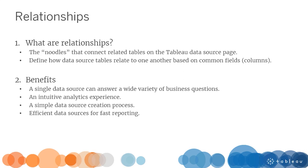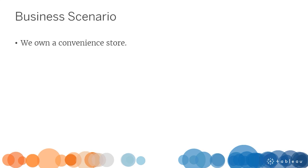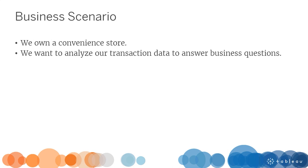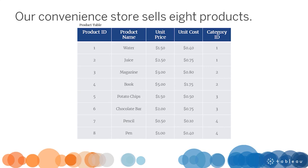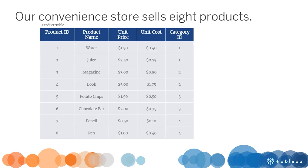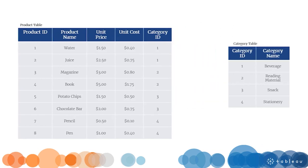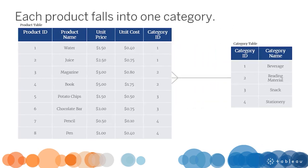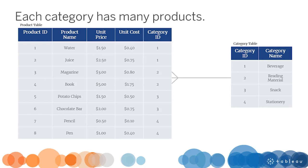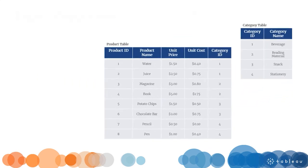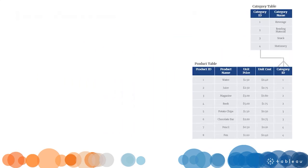Before jumping into Tableau Desktop, let's familiarize ourselves with our business scenario. We own a convenience store and want to analyze transaction data to answer business questions. Our store sells eight products. Each product has a unique product ID, a product name, unit price, and unit cost. Each product falls into one category, and each category has many products. The line between the tables signifies this one-to-many relationship. The two tables relate based on a common field, category ID.